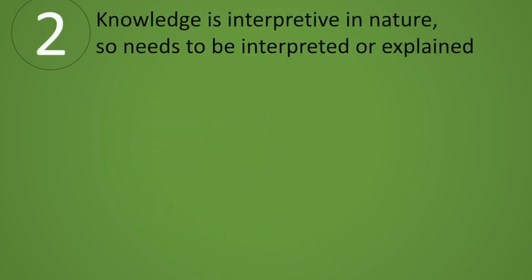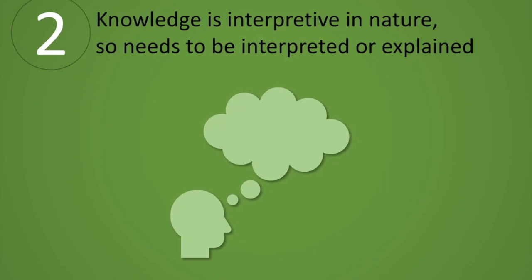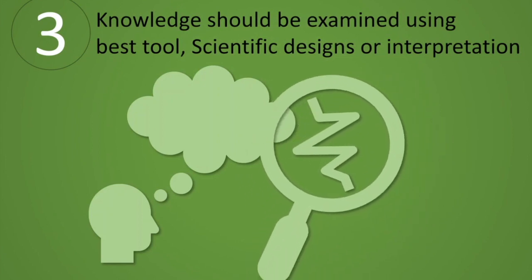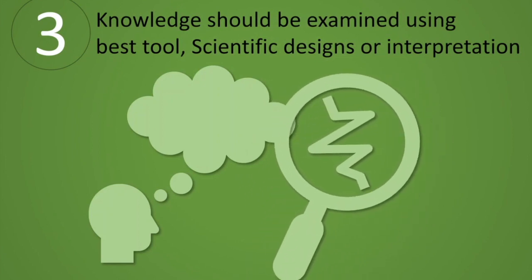The second epistemological belief is that knowledge can be interpreted, not measured — you have to interpret it. We can collect knowledge by interpreting any situation, truth, or reality. The third belief is that knowledge can be measurable or at the same time it can be explained or interpreted. Both options are available.